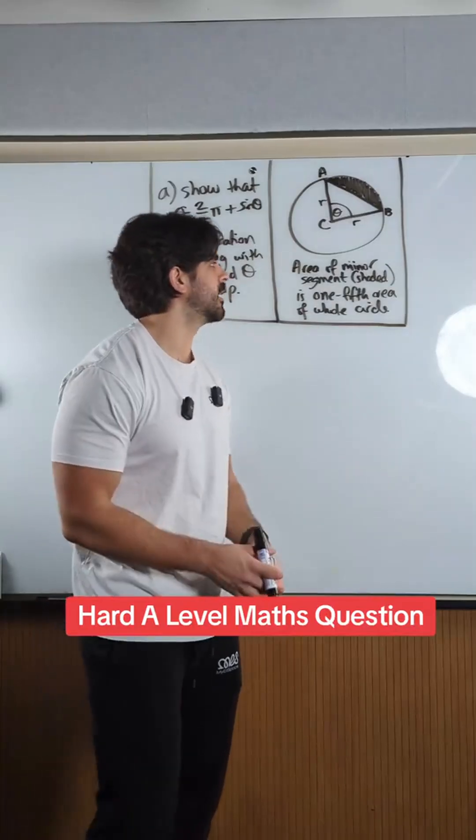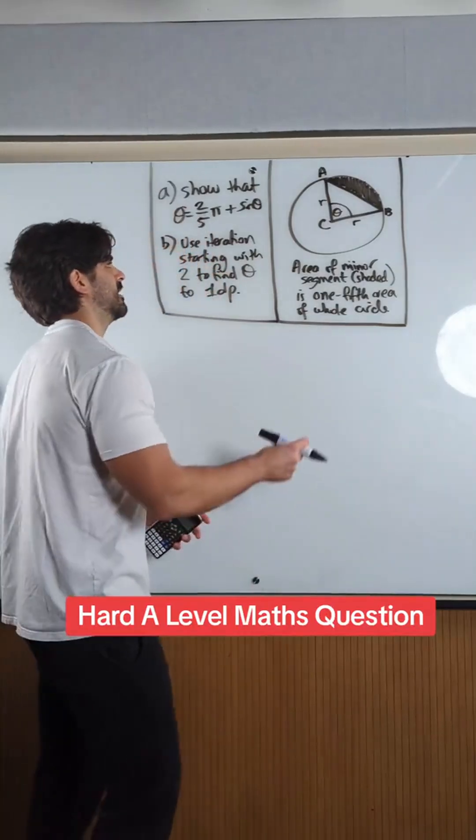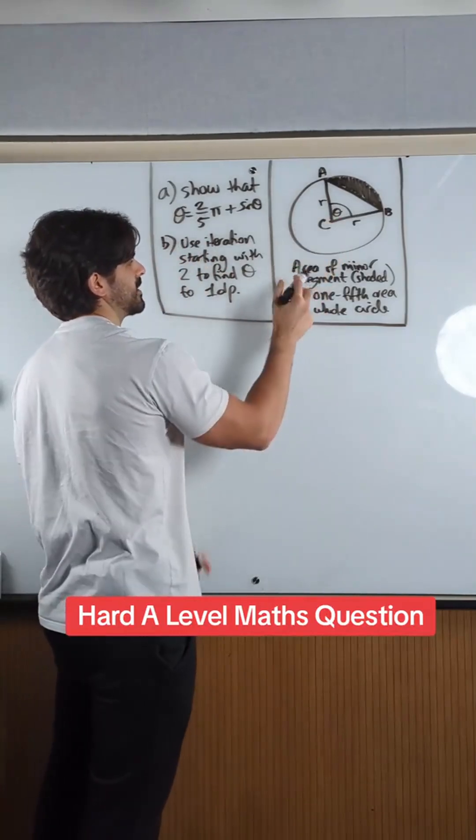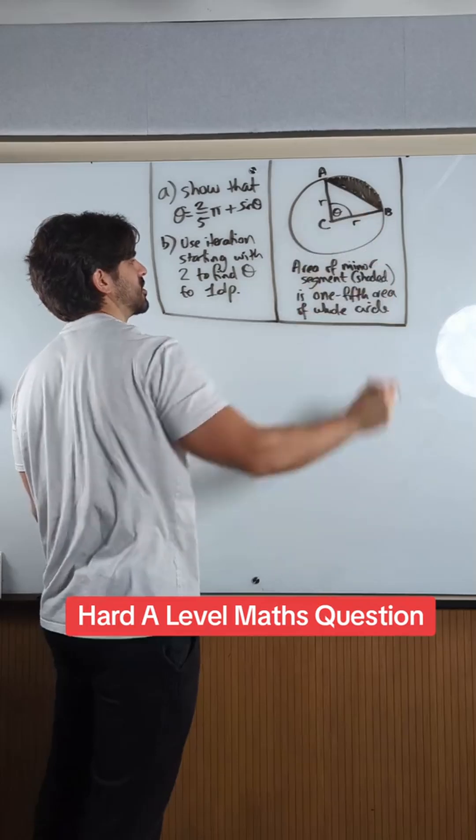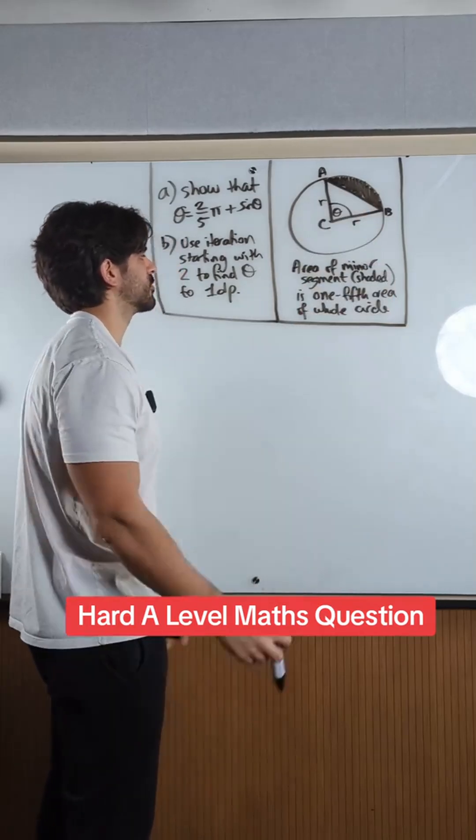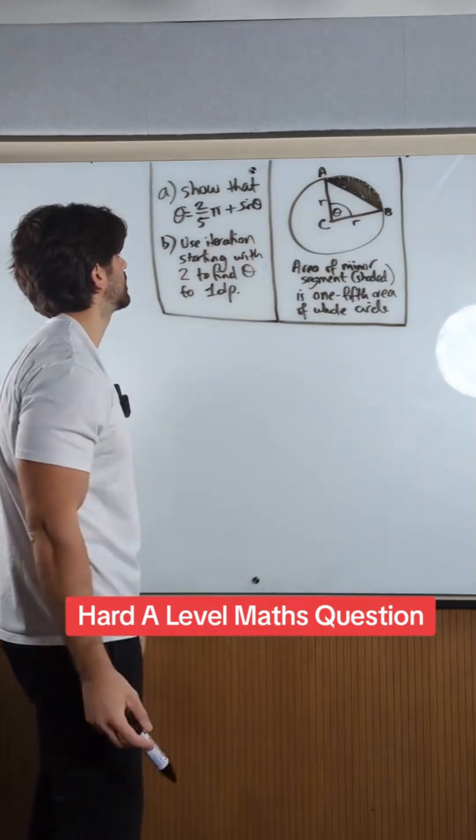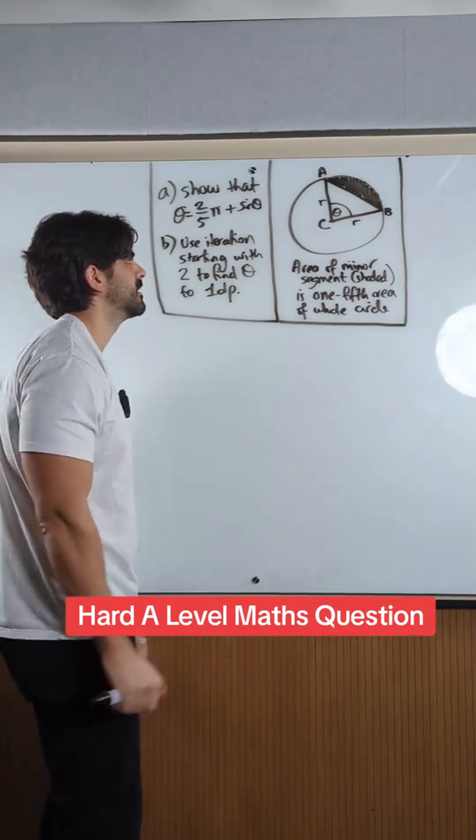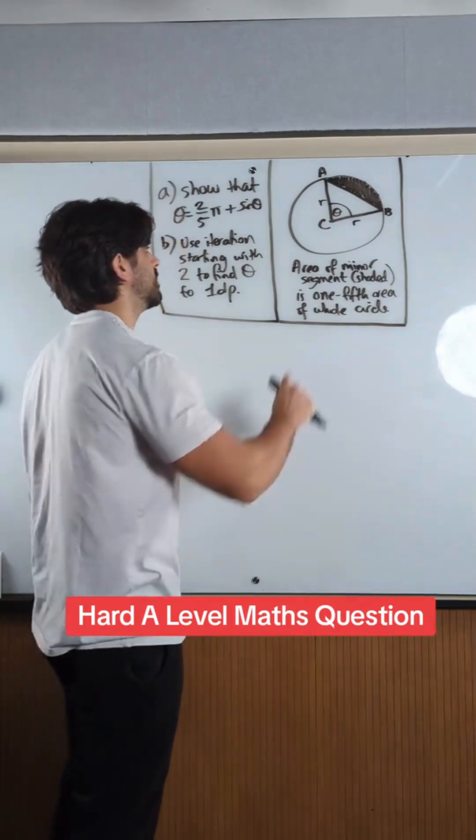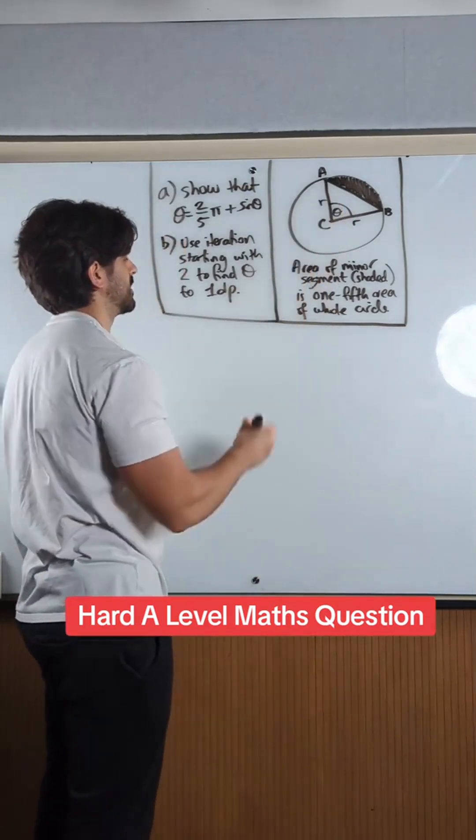Radiant circles, we haven't done this in a while. So we have a circle where the area of the minor segment which is shaded is 1/5th the area of the whole circle. Part A: show theta is 2/5π plus sine theta.